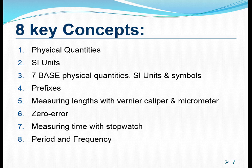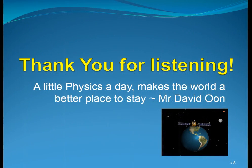The last slide itself will help to outline the eight key concepts for this particular chapter number one. And these eight key concepts concern physical quantities, SI units, the seven base physical quantities, SI units and symbols, prefixes, and we will then attempt to measure lengths with Vernier Caliper Micrometer, dealing with zero error that exists in the Vernier Caliper Micrometer, measuring time with stopwatch and finally, the concepts of period and frequency. So that brings us to the end of the first lesson, what physics is all about. Thank you for listening.